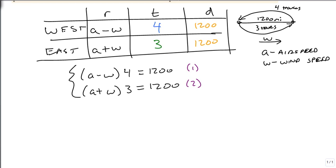Now, if you look carefully, we're almost set up for elimination already because we've got a minus W and a plus W. But we have this 4 and this 3 on the outside. A lot of times we want to distribute to get rid of parentheses, but in this case, because we have an equation, we can actually take equation 1 and divide it by 4, and equation 2 and divide it by 3, to get A - W equals 300 and A + W equals 400.